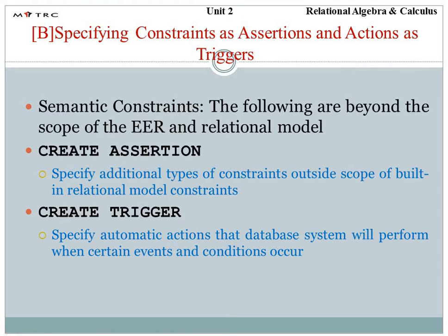First we use the built-in relational model. The second command is create trigger. Create trigger is also known as automatic actions that the database system will perform when certain events and conditions occur. We need to understand the create trigger — how we define it, how we study it. The discussion is about assertion and how it works on the basis of the trigger. If we create a trigger, it will take the automatic action commands which will act on the database when there is any event or condition.